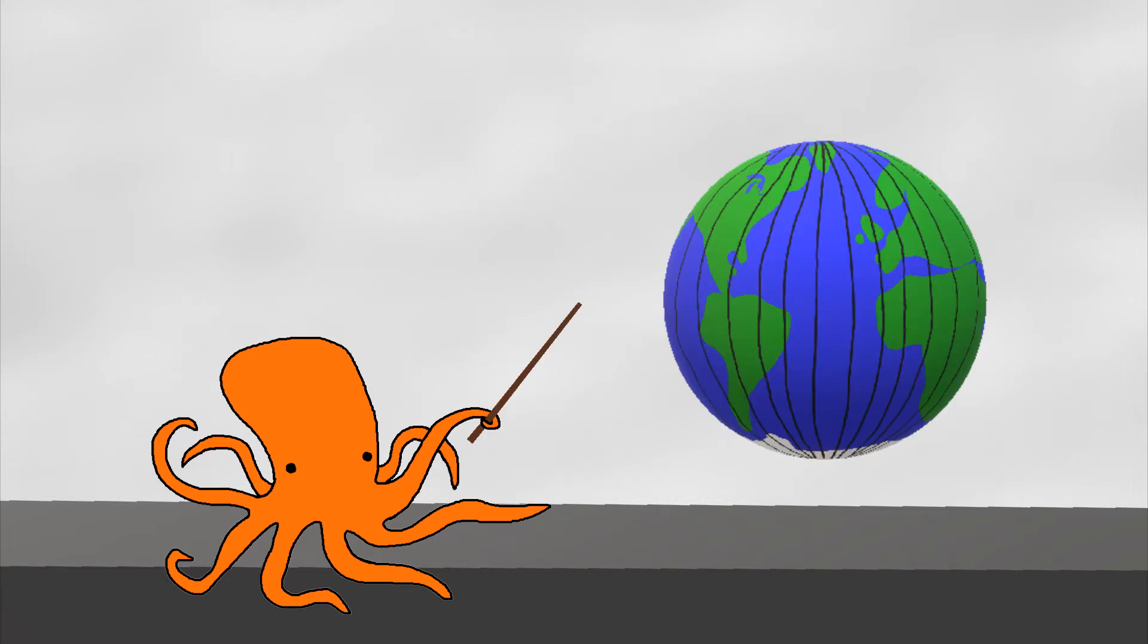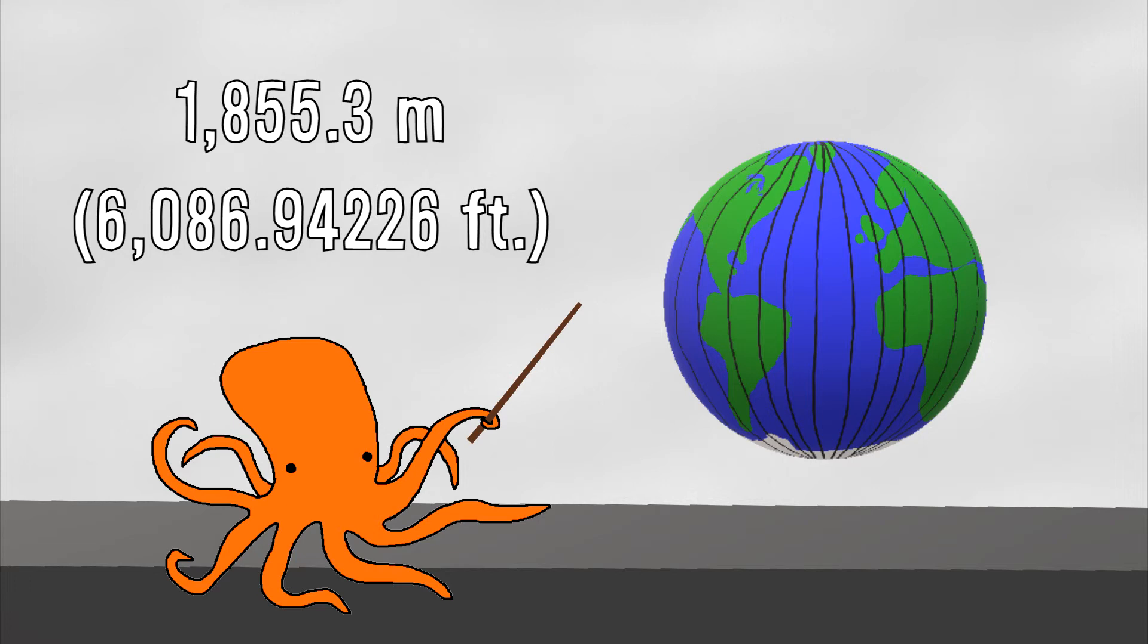So, geographical miles are the distance along the equator from two longitude lines who are one arc minute away from each other. This measurement comes out to approximately 1855.3 meters, depending on what model of earth you use.